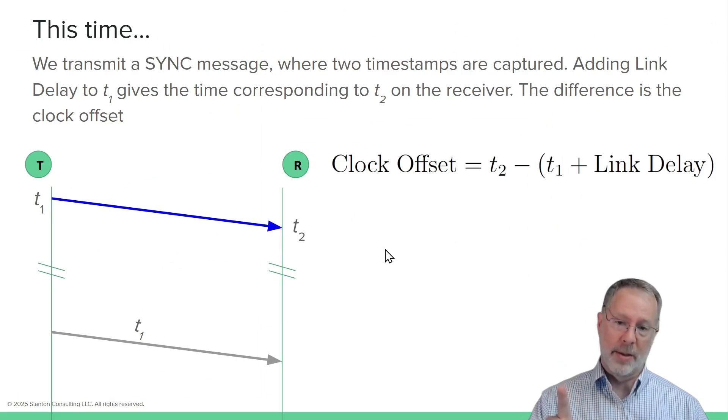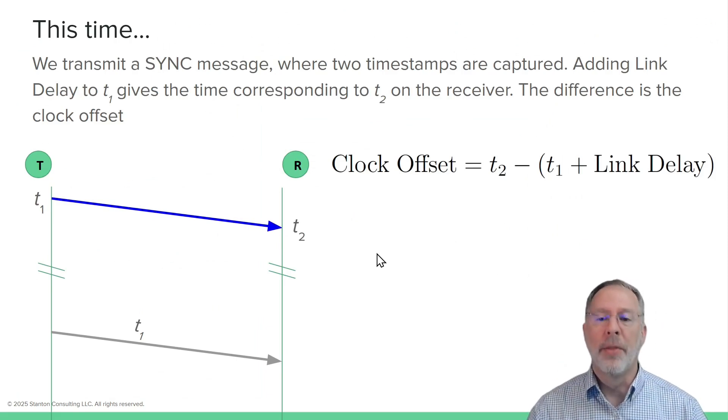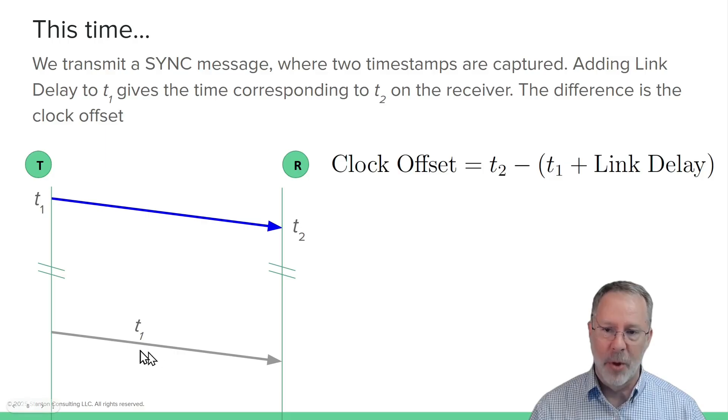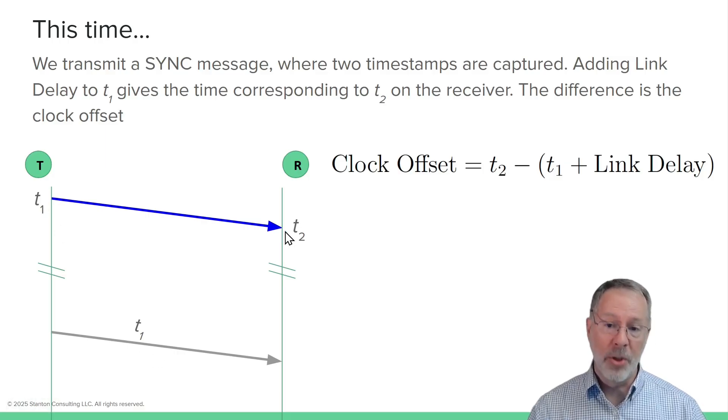Once we know the link delay, now we can measure the clock offset. In PTP, the message is called a sync message. It's timestamped when it's transmitted, and the timestamp's passed in a follow-up message sometime later. And it's received, and timestamp T2 is captured. Once the time receiver has both T1 and T2, it can make a calculation.